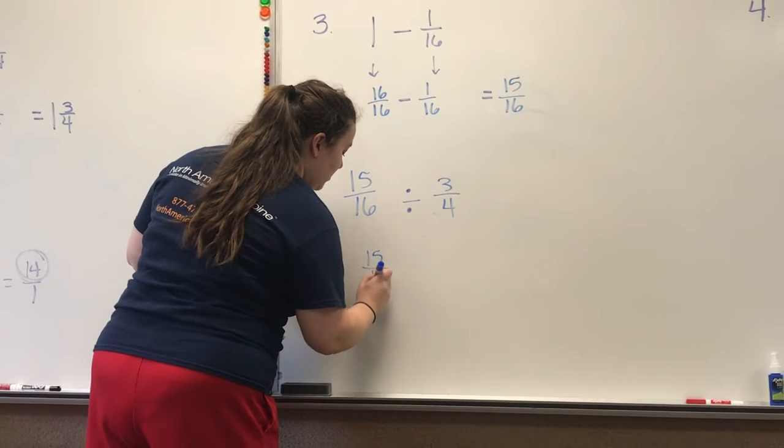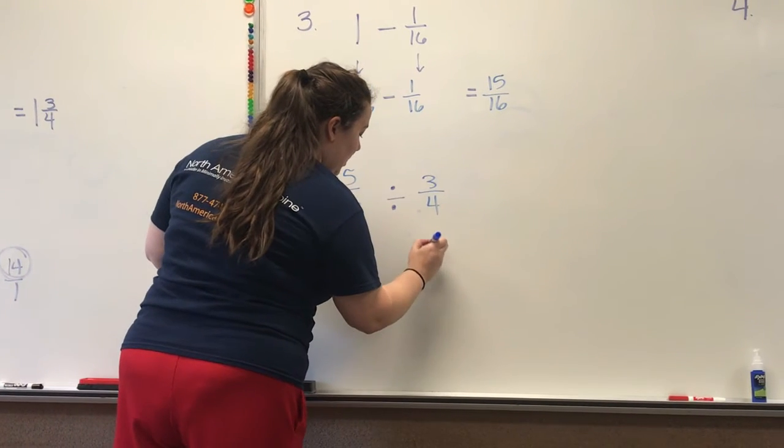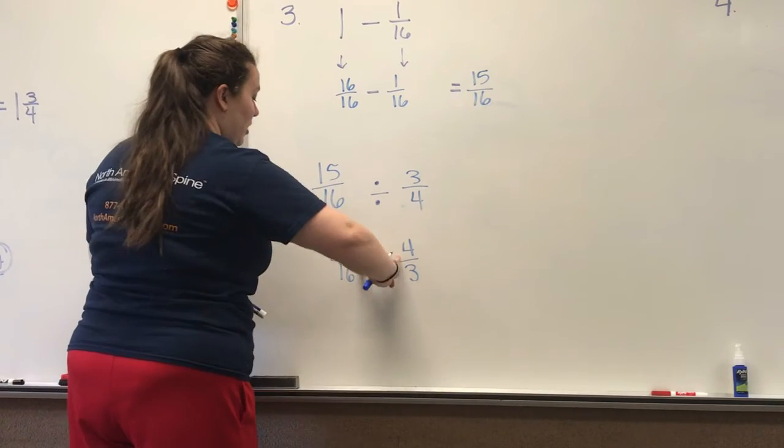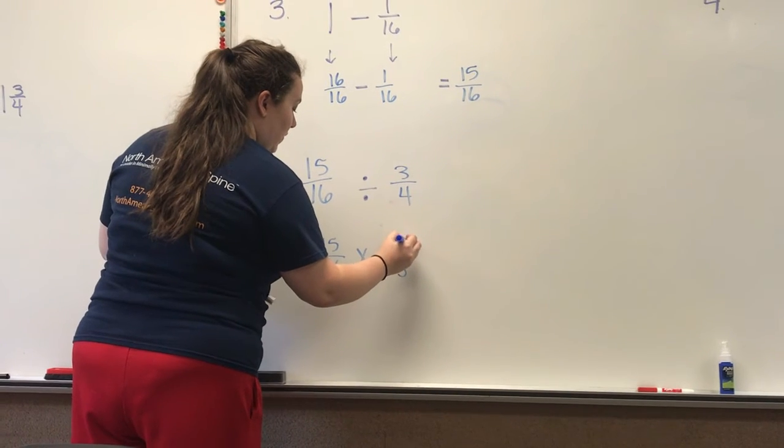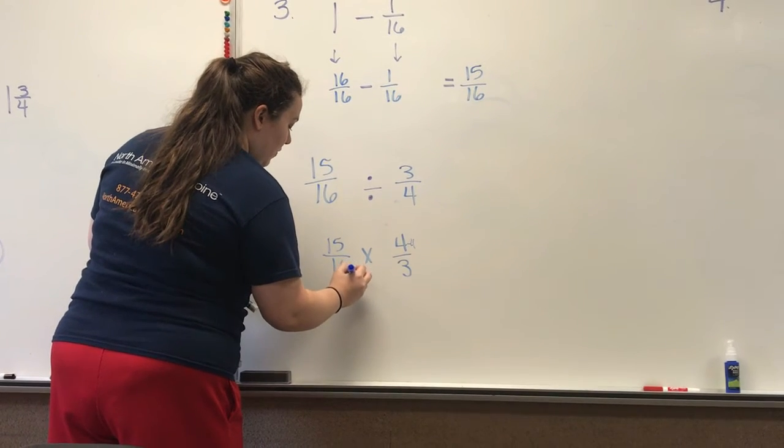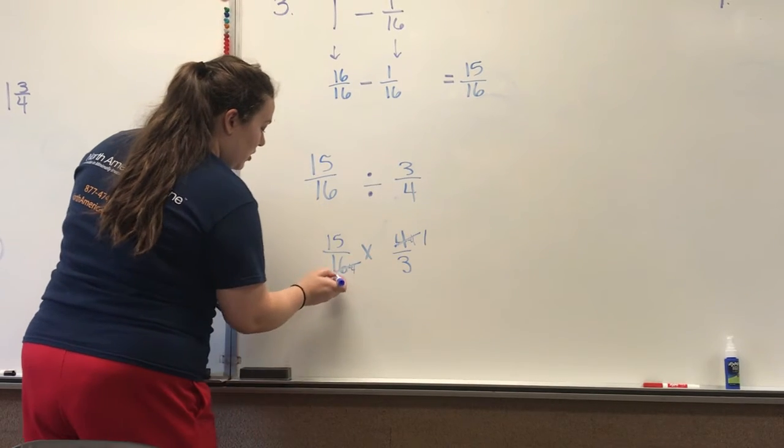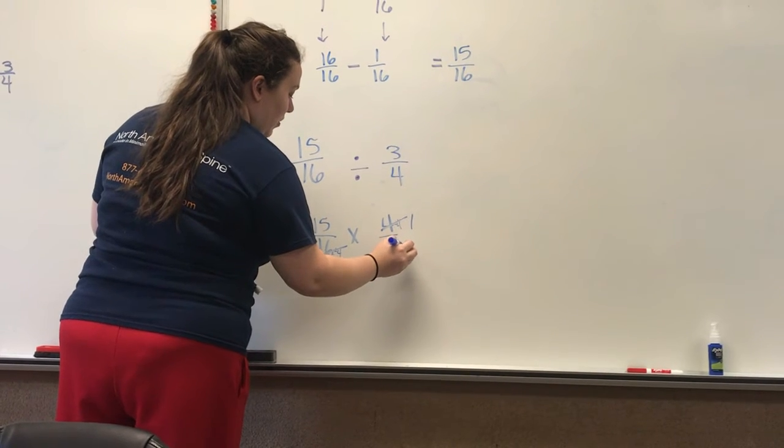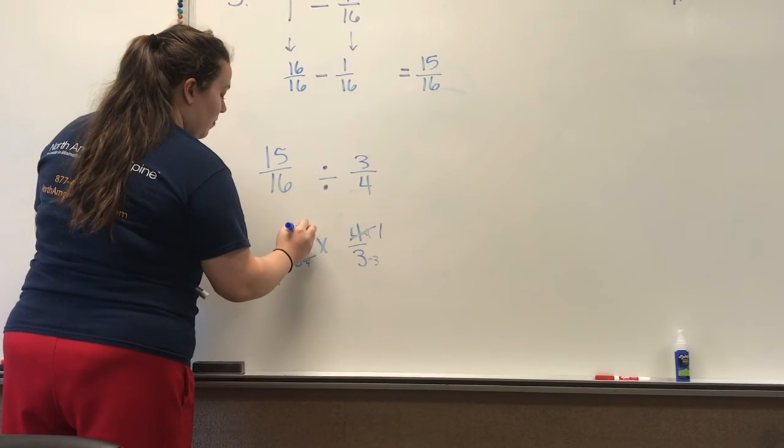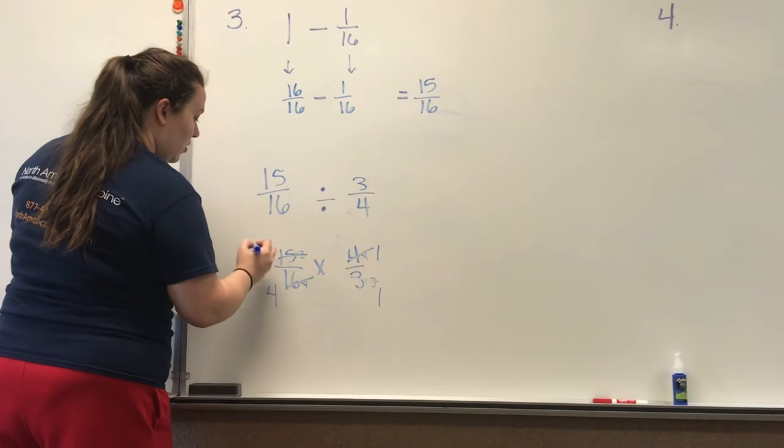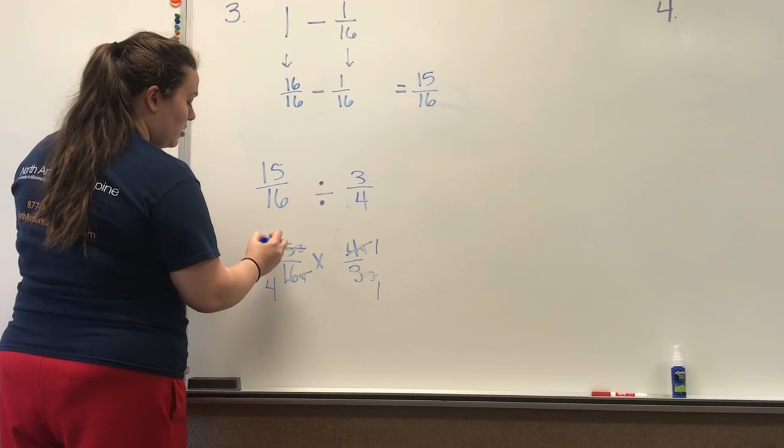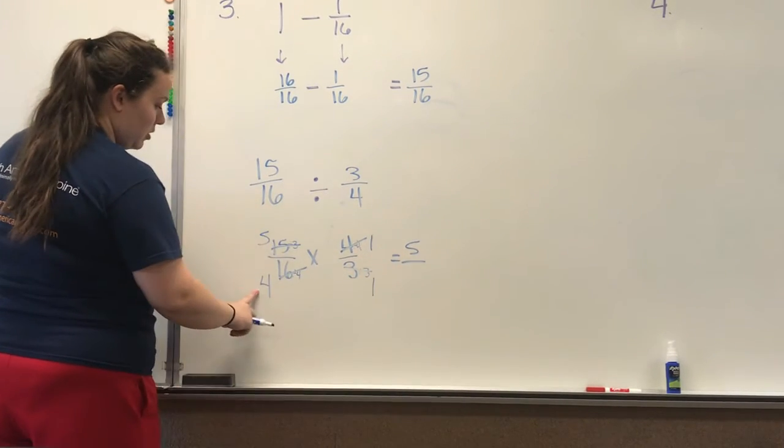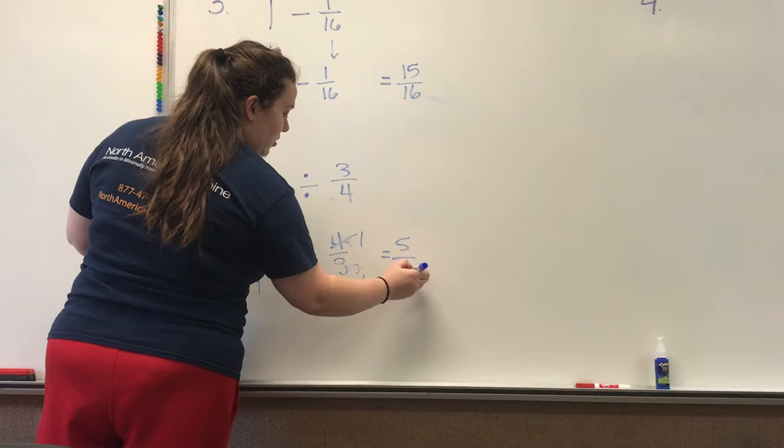So keep the first fraction, flip this and turn a reciprocal and change this. See if you can reduce. I can crisscross reduce on both of them. This can be divided by four. This can be divided by four. This turns into a one. This turns into a four. These, they have a factor of three in common. Divide by three. Divide by three. And then multiply straight across. So this new number is five times one is five. This new number is four times one is four.